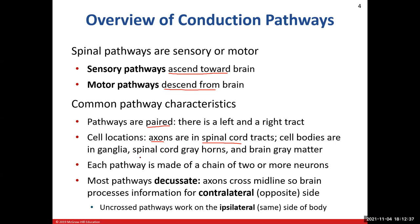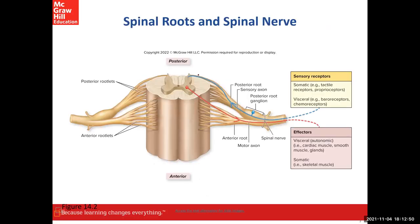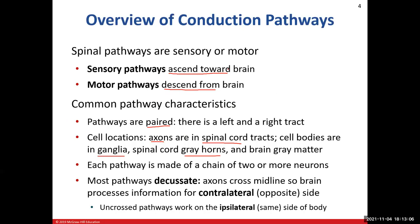The cell bodies are going to be found in the ganglia in the periphery. We'll also see them in the central nervous system — in the spinal cord gray horns: the posterior gray horn, the anterior gray horn, and the lateral gray horn. The other location for cell bodies is in the gray matter up in your brain, including the cerebral cortex or any of the numerous nuclei located throughout your brain.